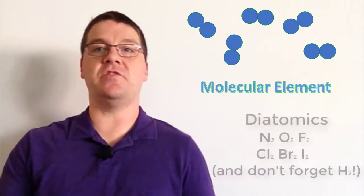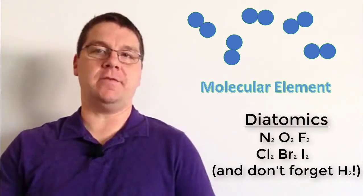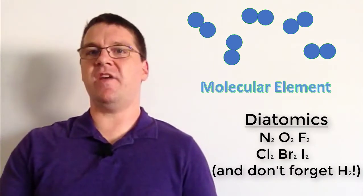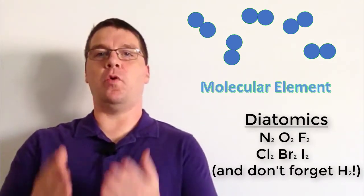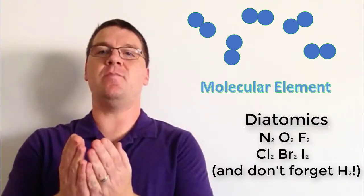For elements that are just a single type of atom there is a special case where you might have a molecular element, say with your diatomics: oxygen, nitrogen, fluorine, chlorine, bromine, iodine. What you would have there are the same symbol but just like within molecules they are touching each other so they are chemically bound together.